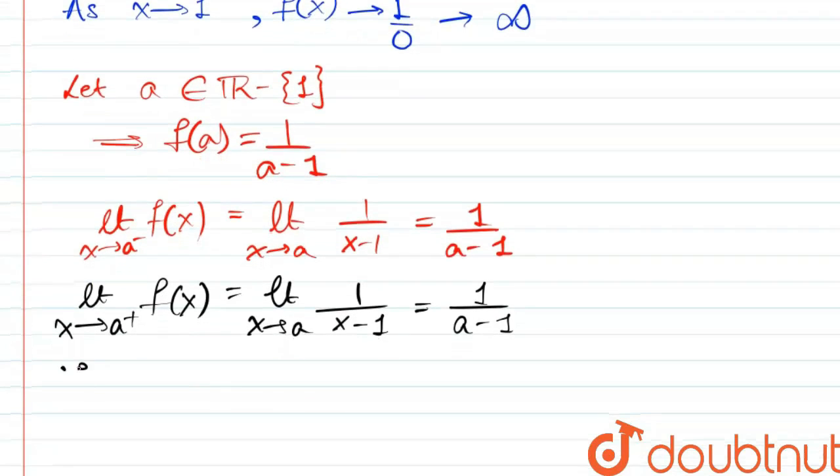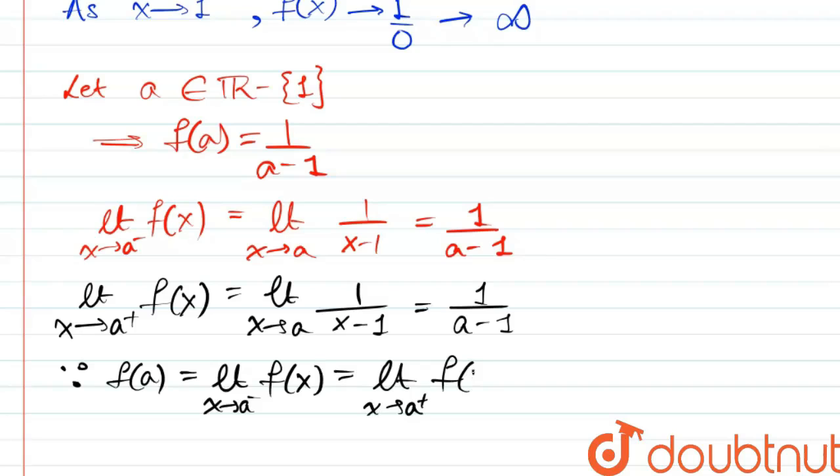Now since f(a) equals the left hand limit as x approaches a of f(x), which is the same as the right hand limit of f(x) as x approaches a, all equal to 1/(a-1) for all real numbers except 1.